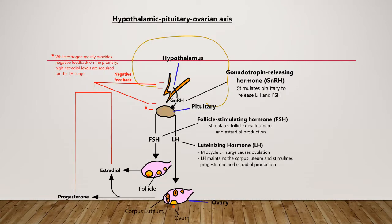The hypothalamus regulates secretion of gonadotropins by the pituitary via the gonadotropin-releasing hormone, i.e. GnRH. Once GnRH is stimulated and secreted by the hypothalamus to the pituitary, it binds to specific receptors which mediate the release and control of LH and FSH secretion by the pituitary in a pulsatile fashion. LH and FSH are carried to the ovaries where they stimulate the secretion and release of progesterone and estrogen.